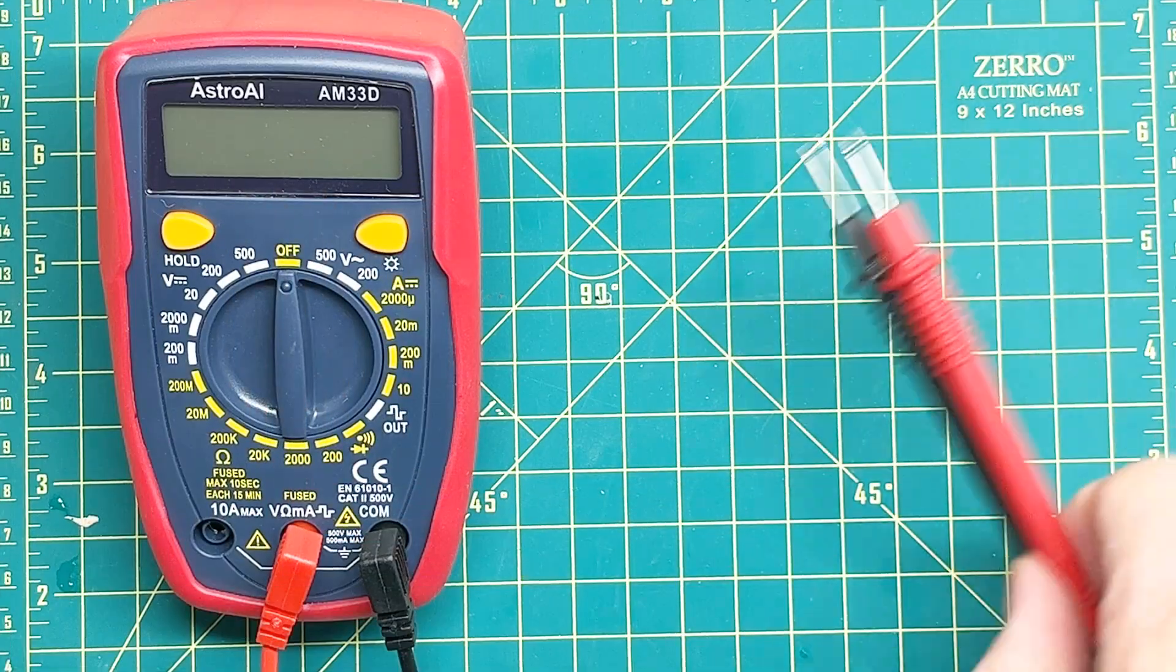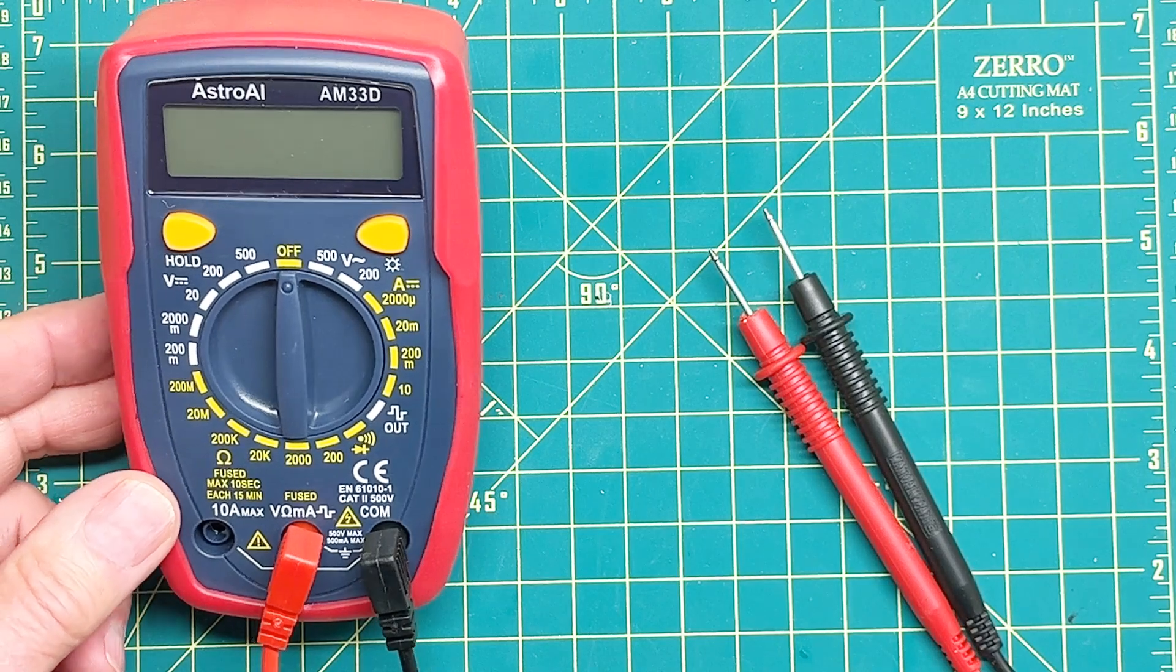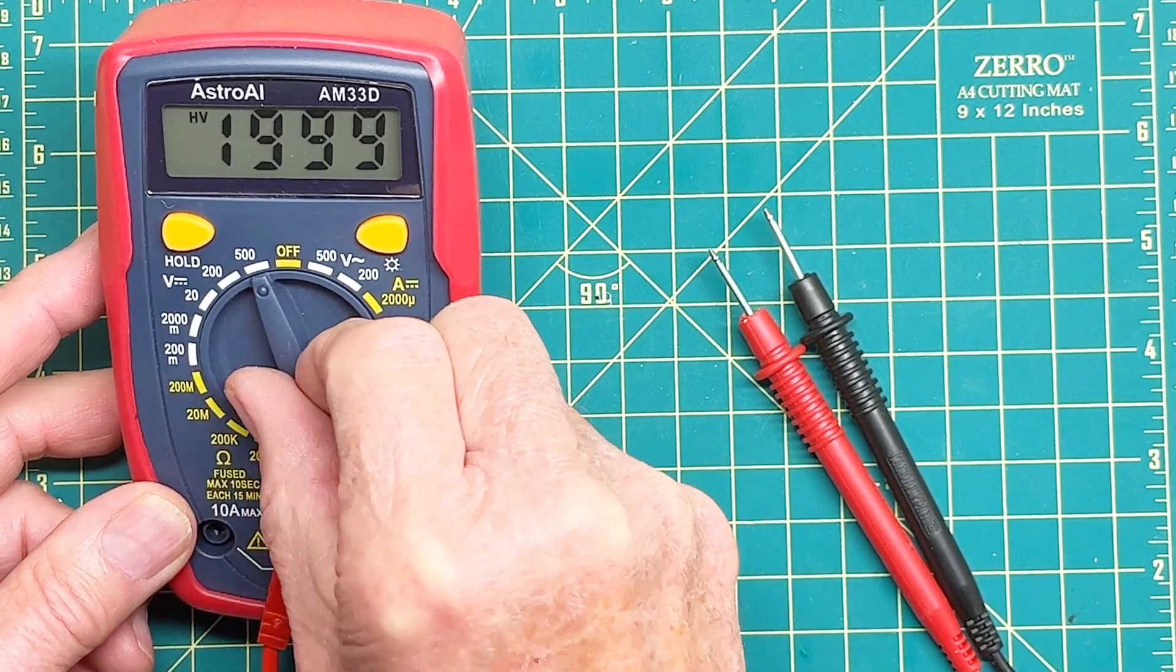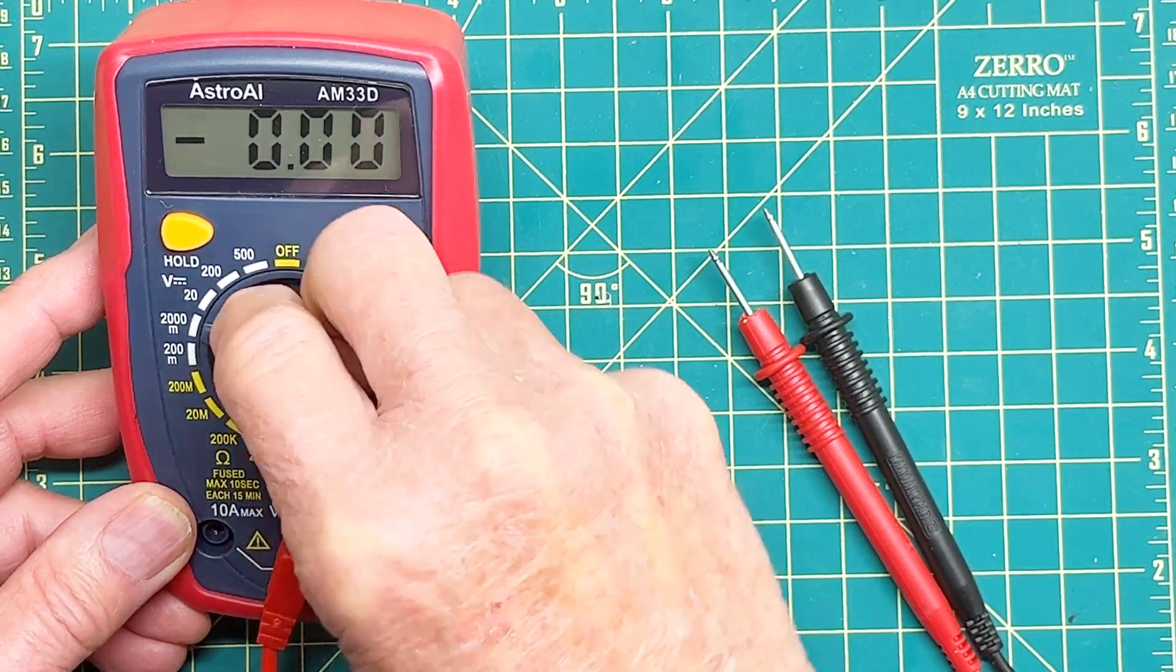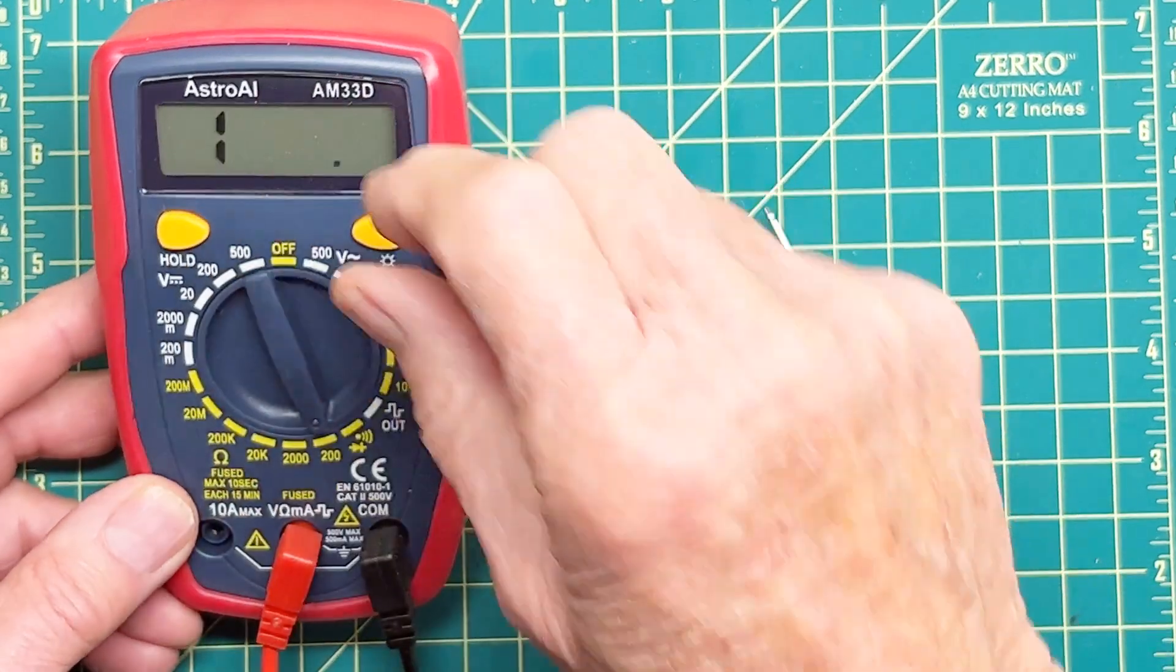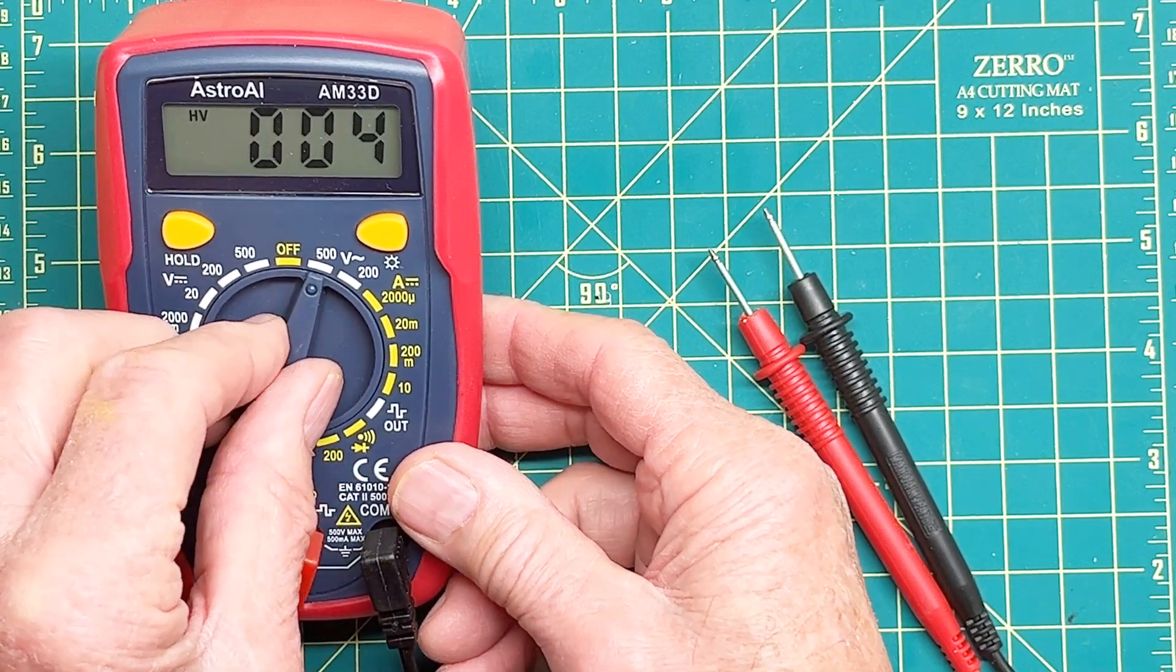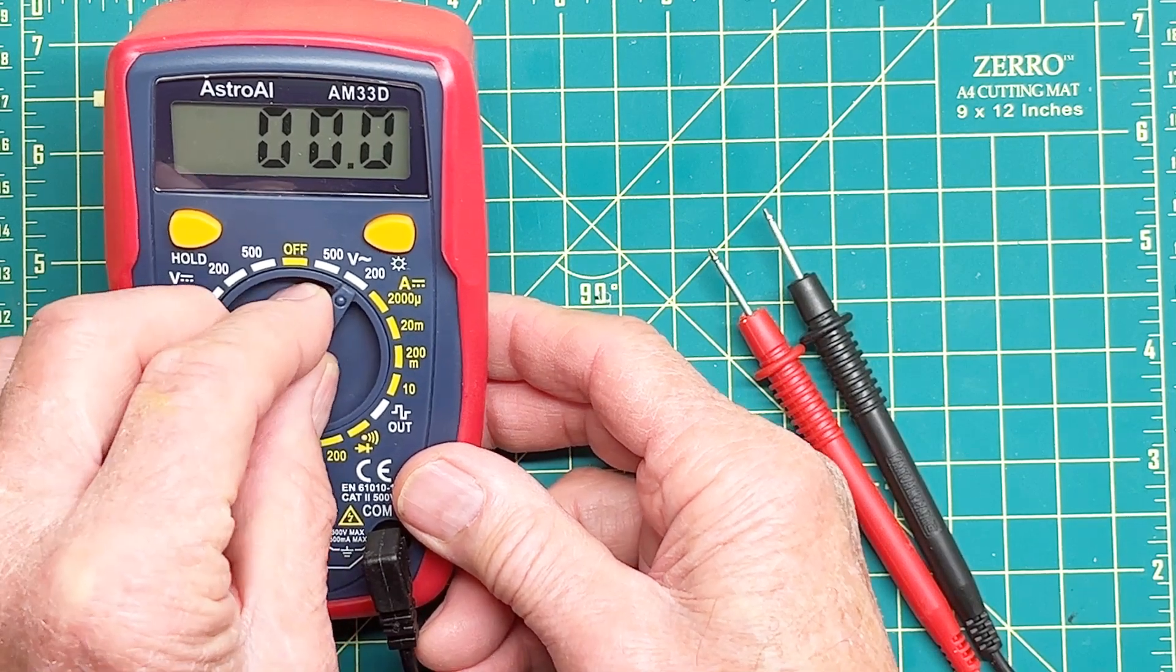Here's another example. It's something that I bought last week on Amazon. It cost about 12 bucks. It has DC voltage here, ranging from 500 down to 0.2 volts. Ohms from 200 megaohms, which is 200 million ohms, down to 200 ohms, and two AC volts. AC range is 500 and 200.